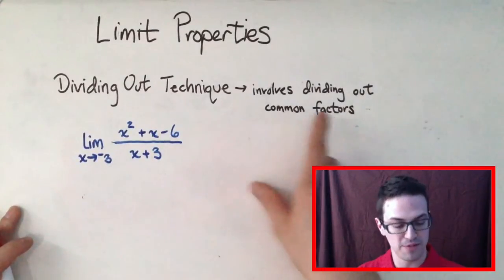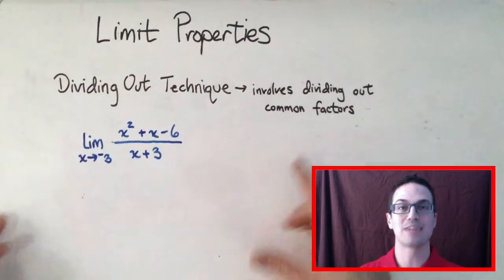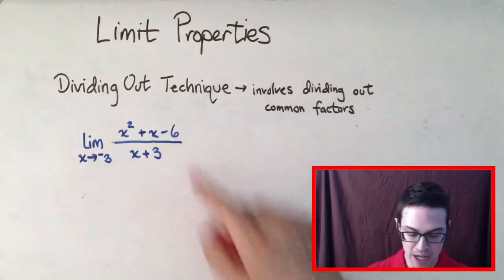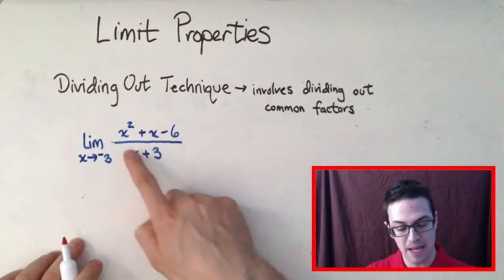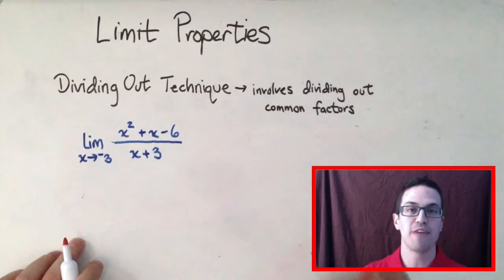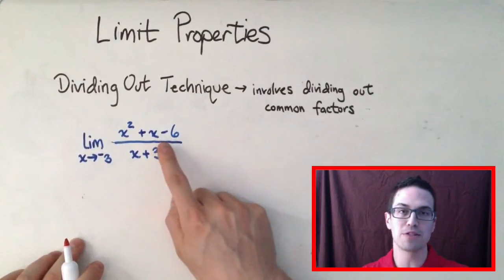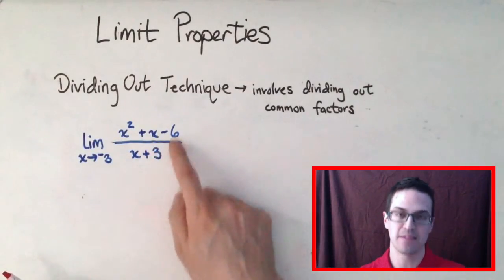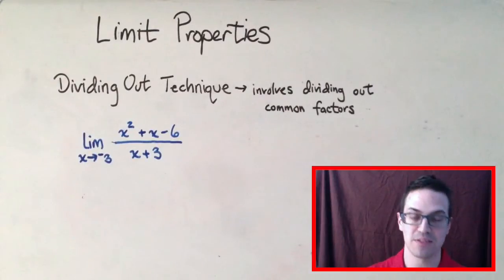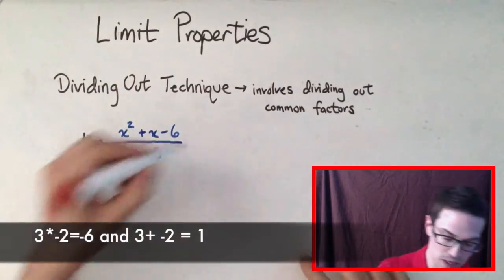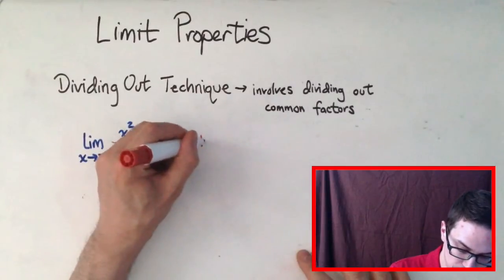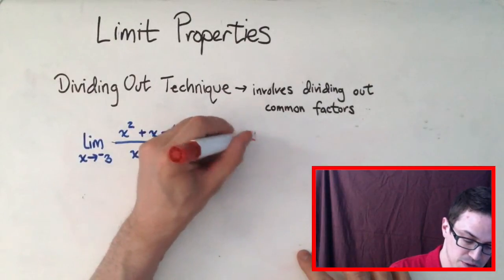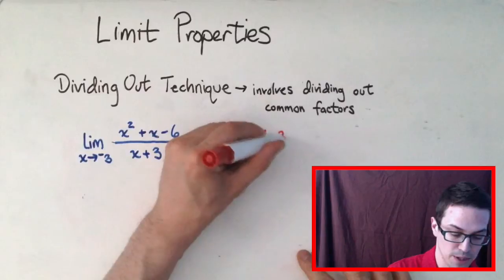The first step for the dividing out technique, since it involves dividing out common factors, is to factor the numerator and denominator. The numerator is quadratic. You need to find two numbers that multiply to get negative six and add to get one, because the b value is one and the c value is negative six. Those two numbers are three and negative two. So factoring gives us the limit as x goes to negative three of x plus three times x minus two, over x plus three.